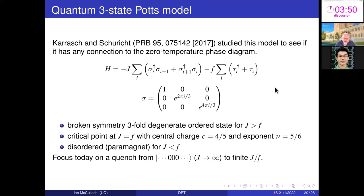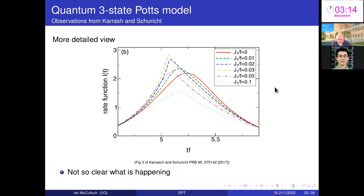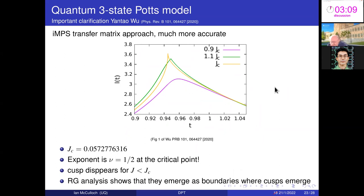I want to get onto the three-state Potts model results. From finite-size DMRG there's a nice paper from Christian Karrasch identifying cusps that develop at later times — at early times there are no cusps, but they tend to develop later, with the exponent seemingly always equal to one. Later work from Yanta Wu identified that if you look just at the point where these cusps emerge, you actually get a non-trivial exponent of one-half — an RG analysis showed these emerge from the boundaries where the cusps emerge.